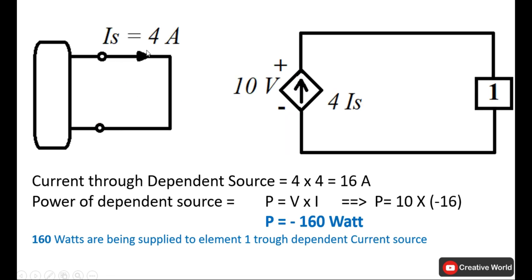In figure B, we have a current Is equal to 4 amperes, and we have a current dependent source with 10 volts across it. The dependent current source value is 4 times Is, so 4 times 4 equals 16 amperes. Since the current is exiting from the positive terminal and entering the negative terminal, by passive sign convention we take this current as negative 16. Power equals negative 16 times 10 equals minus 160 watts. The minus sign indicates it is supplying power — 160 watts are being supplied to element one through the dependent current source.